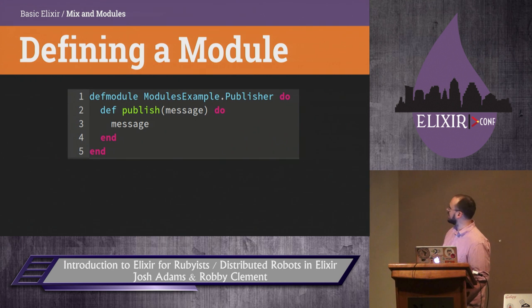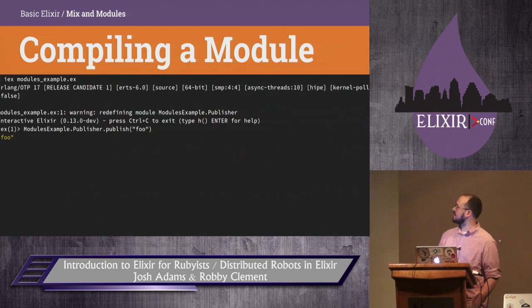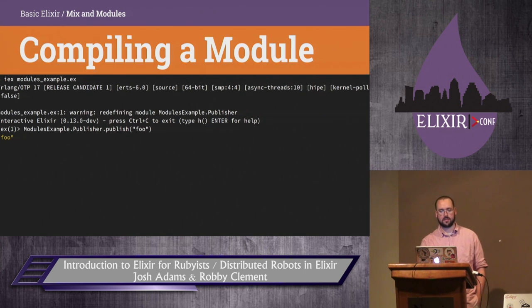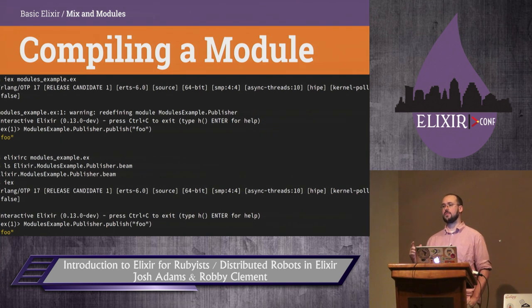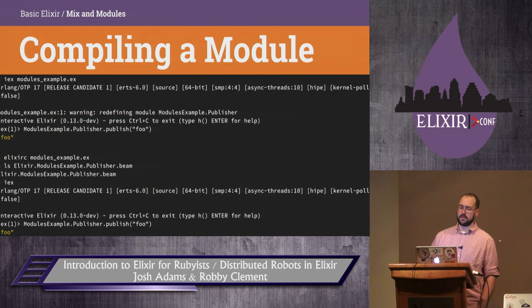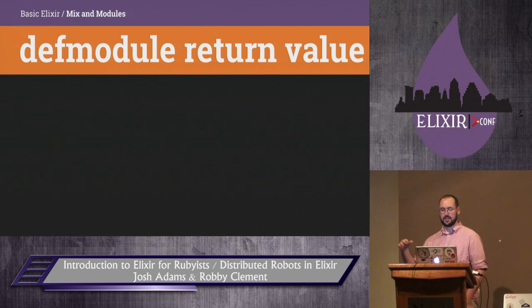Here's a trivial example of defining a module with a single function that just returns the argument. You can launch IEx, give it the .ex file, and call that module's functions. You can also use elixirc to compile it — that'll generate a Beam file. Then you can call IEx and by default it'll pull all the Beam files from the directory it's launched from. Beam is the Erlang virtual machine, and Erlang modules compile down to Beam files just the same way Elixir modules do.